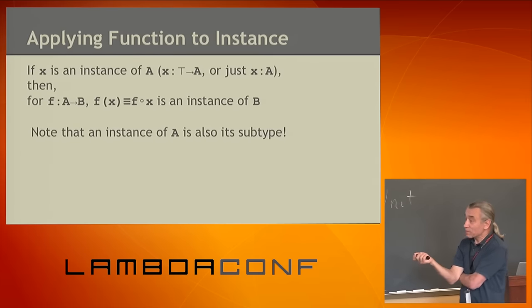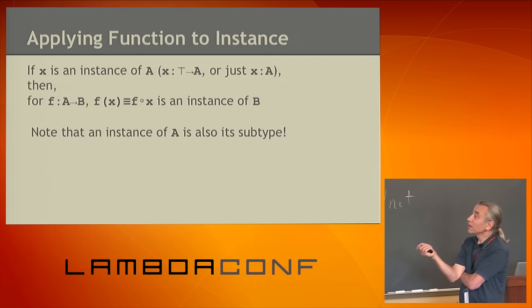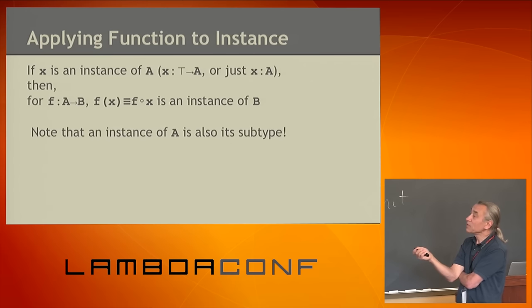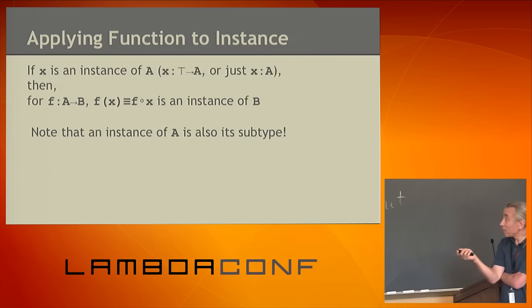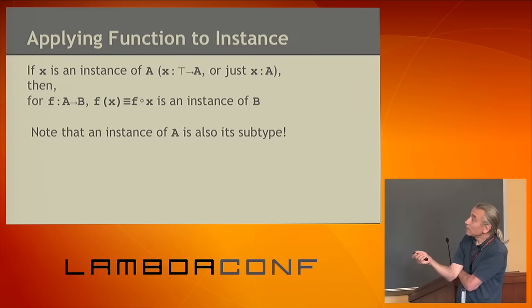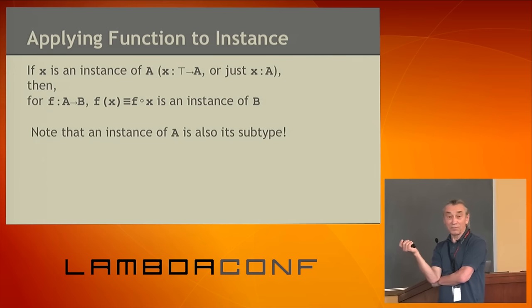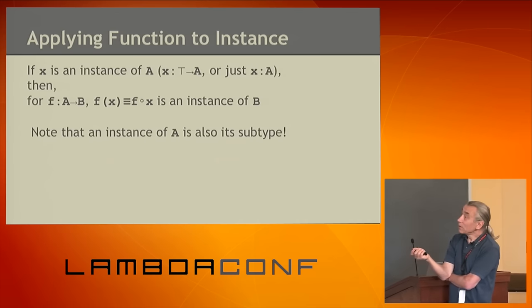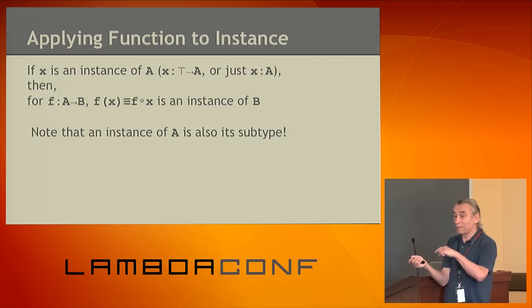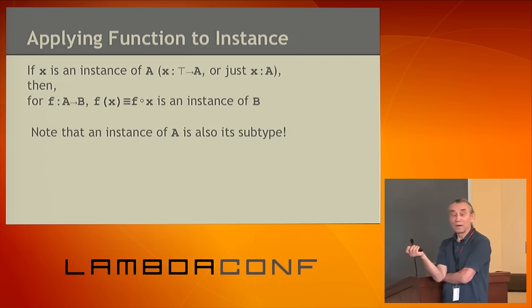Given functions, how do we apply functions to instances? It's composition. If X is an instance of type A, meaning a function from unit to A, composing X with any function F gives F of X. Since X is from unit to A and F is from A to B, the composition is from unit to B — which is exactly an instance of B, a point in B. This allows us to talk about functions as things that map instances to other instances.